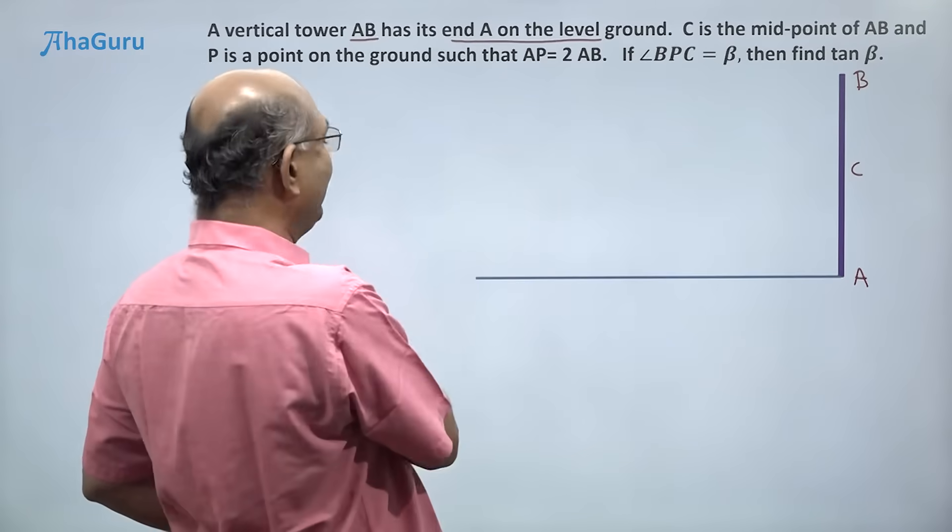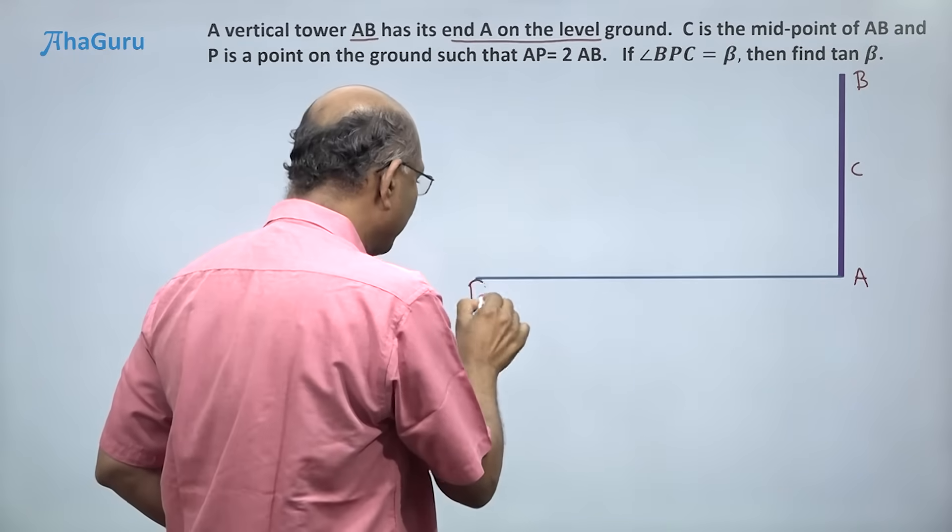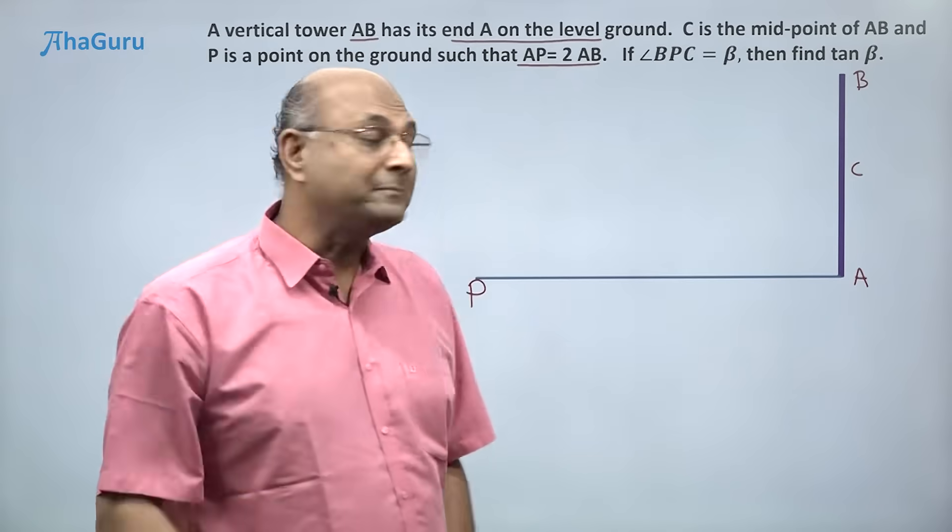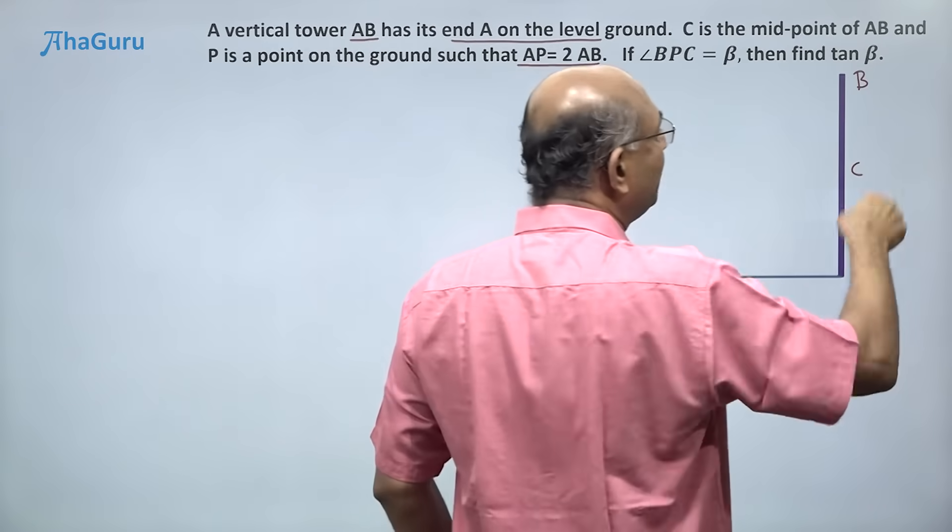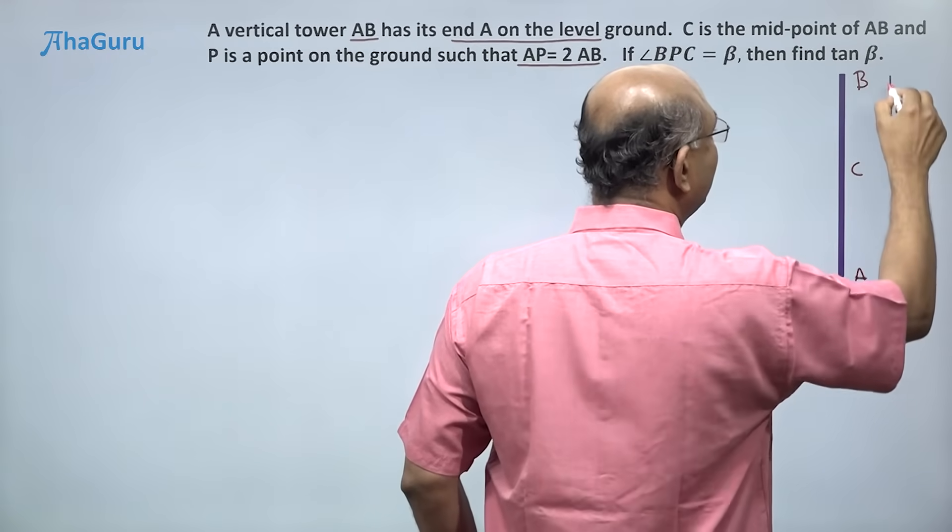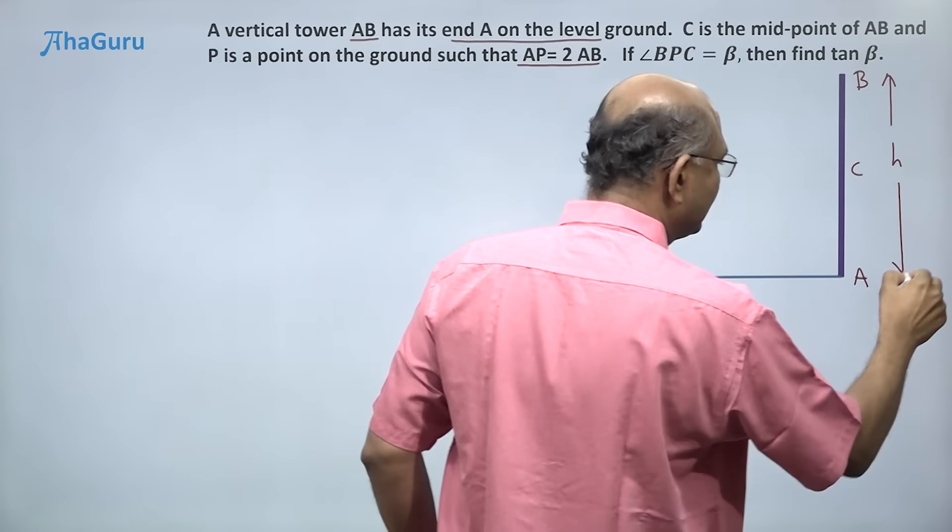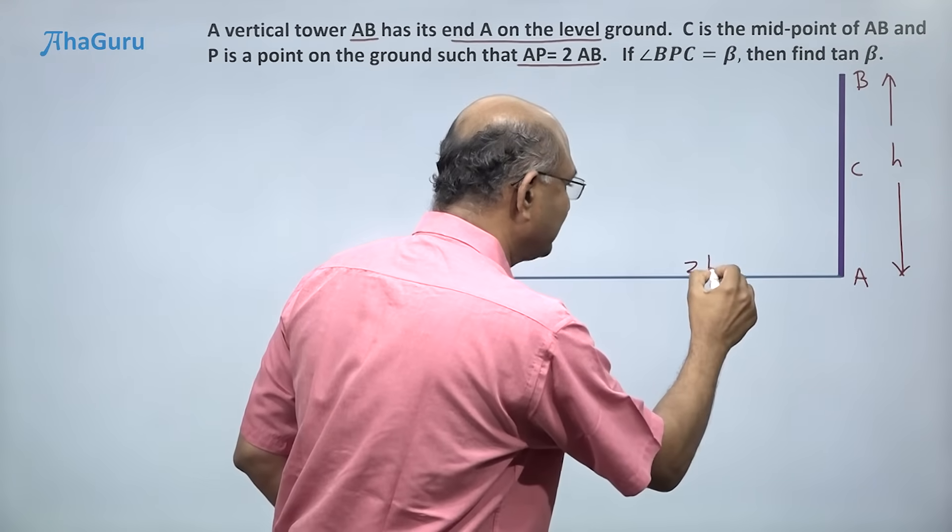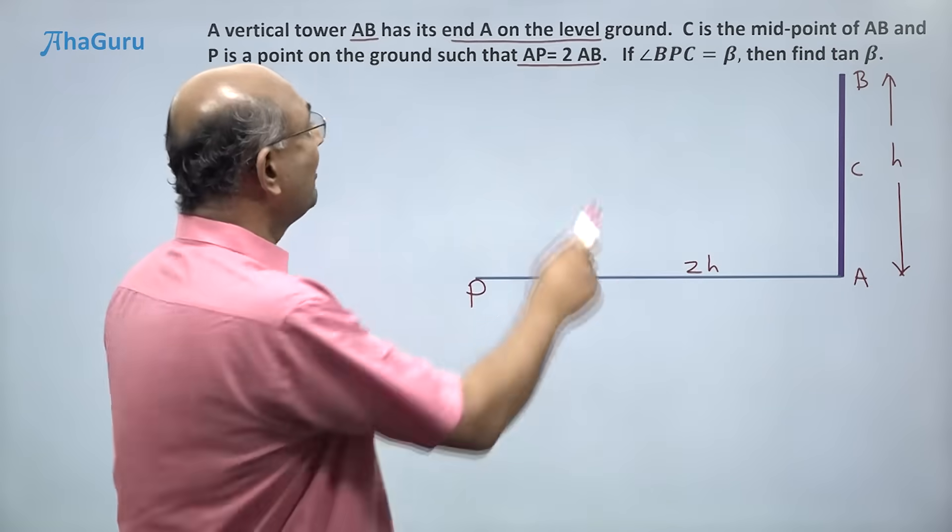The information given is AP is 2 times AB. So if I call AB as h, if I say that this height is h, what will AP be? It has to be 2h, so this is 2 times h.